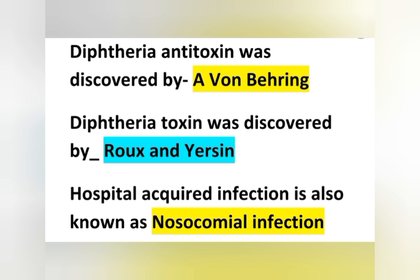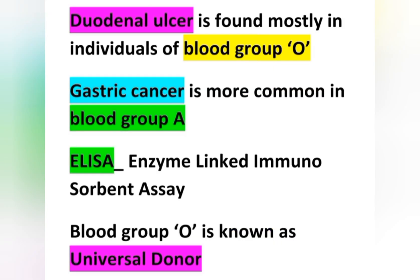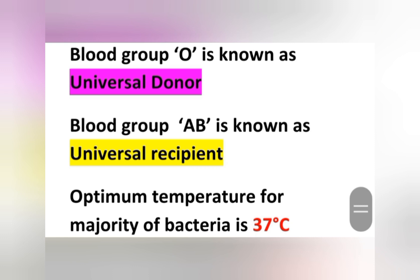Hospital-acquired infection is also known as nosocomial infection. Duodenal ulcer is found mostly in individuals of blood group O, while gastric ulcer is more common in persons with blood group A. The full form of ELISA is Enzyme-Linked Immunosorbent Assay. Blood group O is the universal donor and blood group AB is the universal recipient.